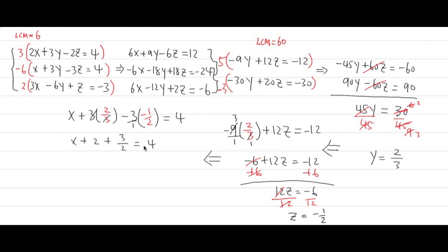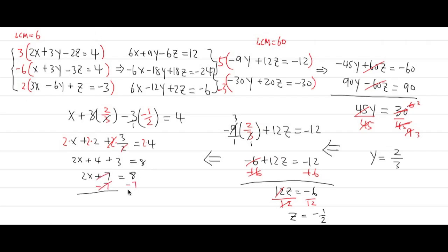Multiply everything by 2 to clear the fraction: 2x plus 4 plus 3 equals 8, so 2x plus 7 equals 8. Subtract 7 from both sides: 2x equals 1. Divide both sides by 2: x equals 1/2.